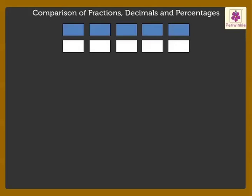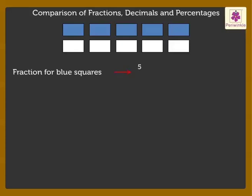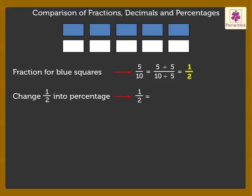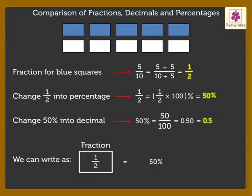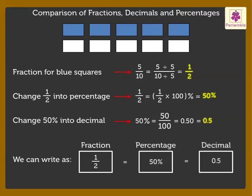Look, there are 10 squares. Out of these 10 squares, 5 squares are blue. We can write the fraction for blue squares as 5 upon 10. When we reduce this fraction, we get 5 upon 10 is equal to 1 upon 2. Now, let us change 1 upon 2 into percentage. Thus, 1 upon 2 is equal to 1 upon 2 into 100% is equal to 50%. Now, let us change 50% into decimal. Thus, 50% is equal to 50 upon 100 which is equal to 0.5. Hence, we can write 1 upon 2 as 50% and 0.5 as decimal.